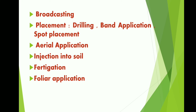The next type is band application. Band application is a practice used for standing crops — for example, with sugarcane, you cannot go into the field and apply fertilizer directly. So fertilizers are applied in bands on either side of the crop rows. This is one of the best methods and is also called side dressing, mainly used for fruit trees.